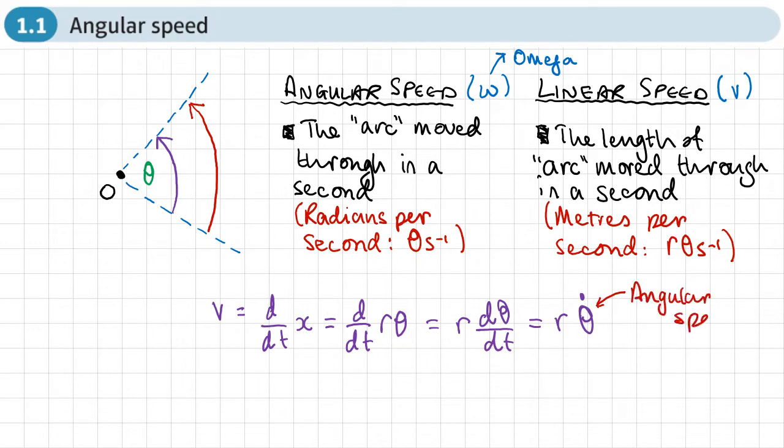So now we have a way of converting linear speed to angular speed, and we've got this formula here: v equals r times by the angular speed, and we use the letter omega for that. So we have v equals r times omega. So that means if I want to convert angular speed to linear speed, I could say omega is equal to v over r.